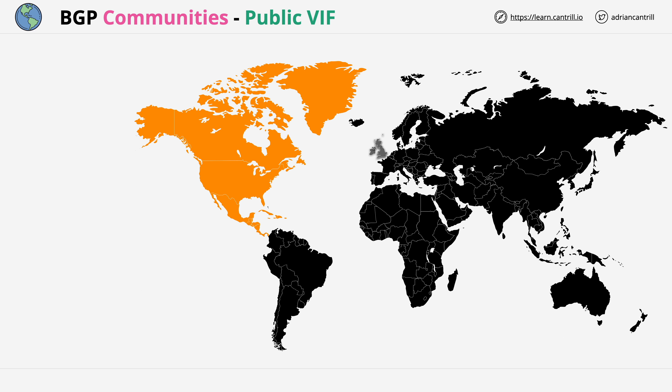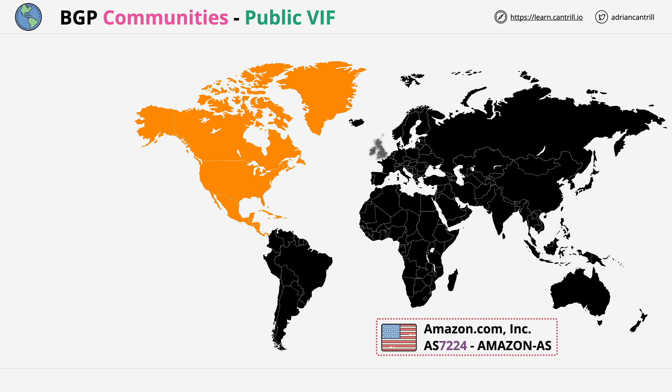Let's look at this visually. This is a rough approximation of a world map — most of it is shown in black. The North American continent is highlighted in orange and the UK, part of the European continent, is shown in lighter grey. For context, 7224 is the AS number of Amazon Inc. When AWS performs any operations involving BGP, especially public ones, they will generally use the 7224 ASN. We'll assume the Animals for Life organisation has a DX connection in the Northern California region, with business premises located nearby.